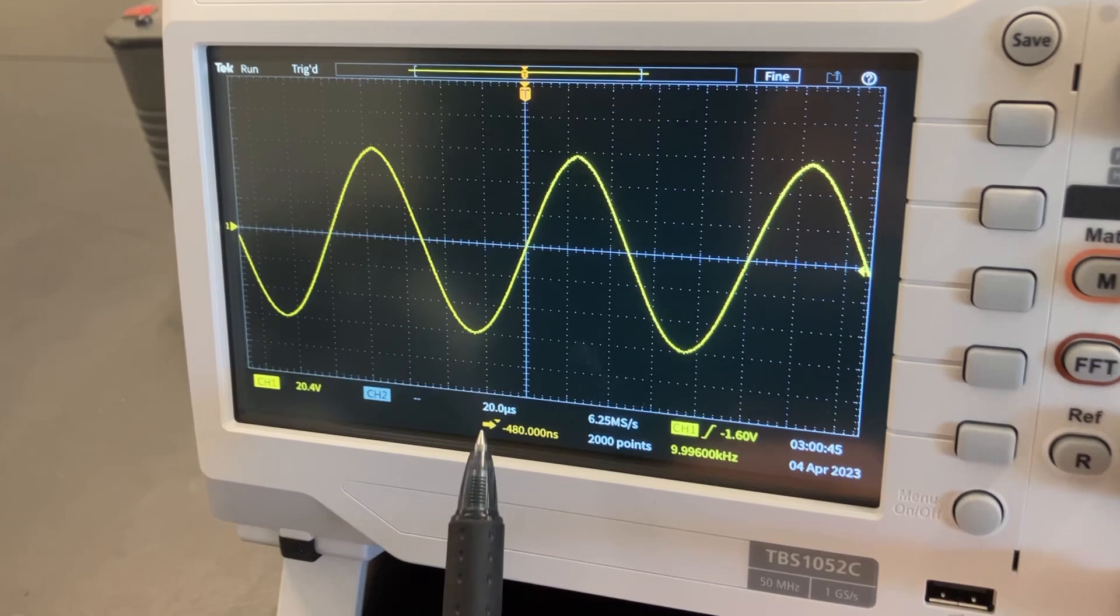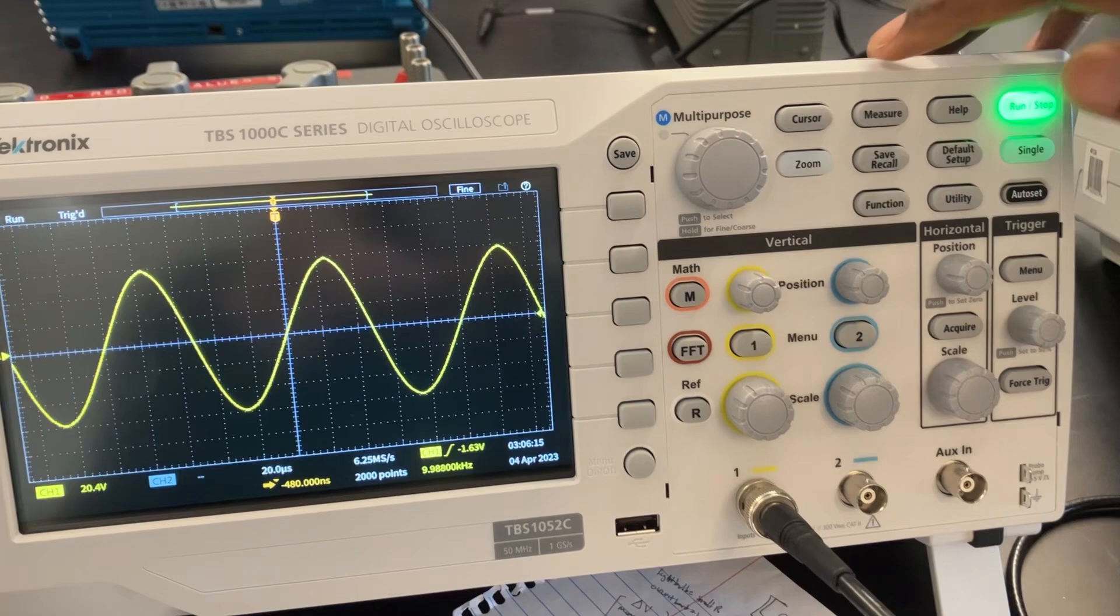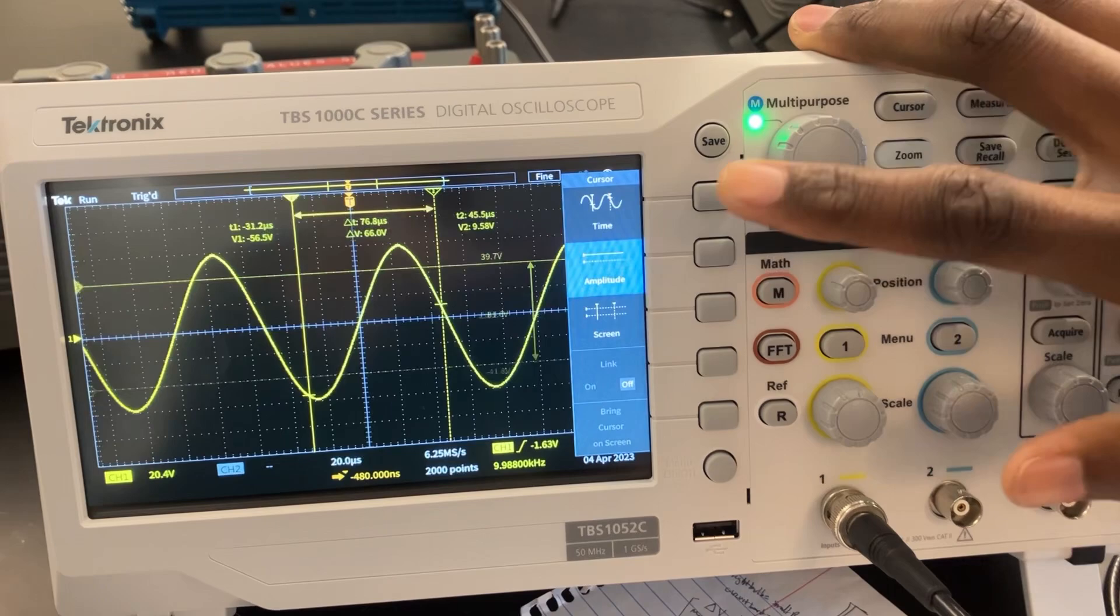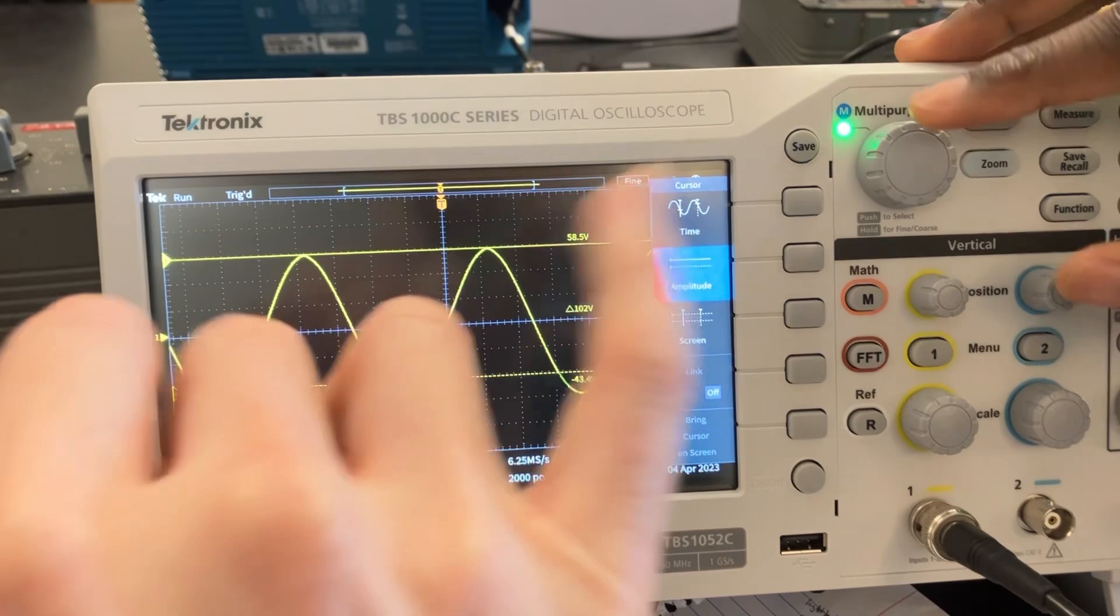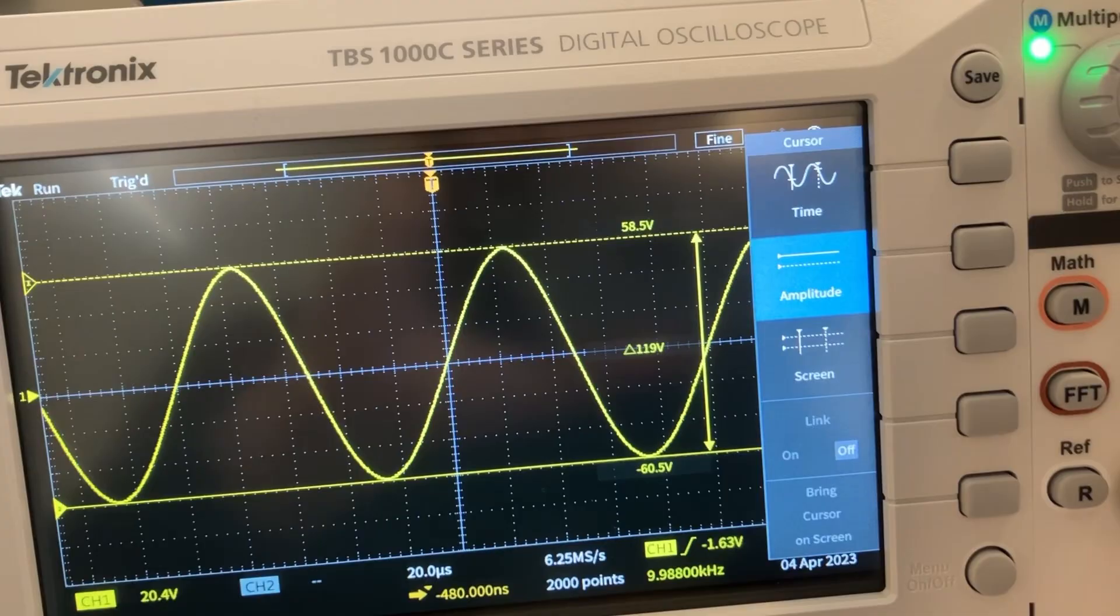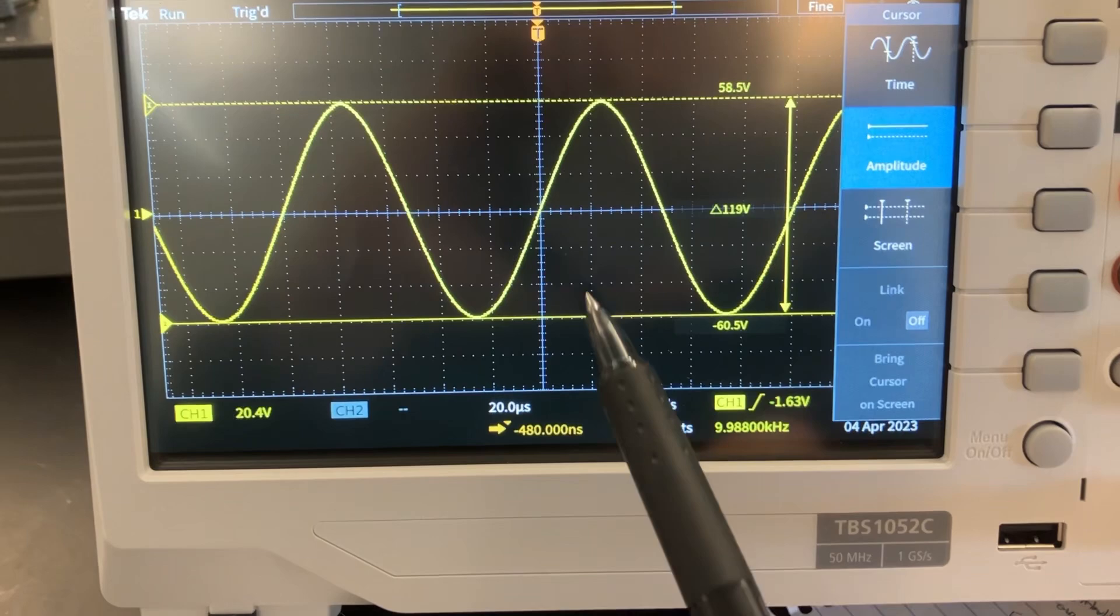We're going to click the cursor button and change it from time to amplitude. Now we've switched to voltage mode. We'll click the multipurpose button to switch to the top cursor and move that to the top, then click one more time to get the bottom cursor and drag that down. Delta V here is 119V. Because these are 20.4 volts each, one square should be 20.4 volts, so this entire thing should be about six times 24 - we should be getting about 122.4V if we calculated precisely. We got 119, so we have a small error.